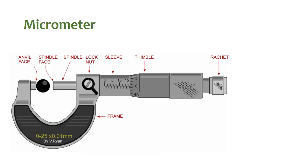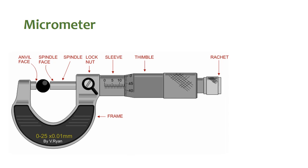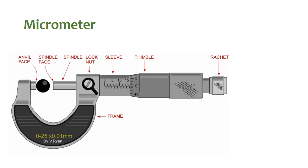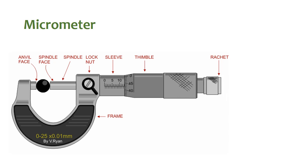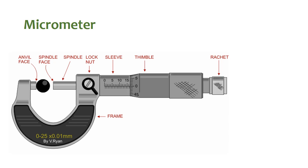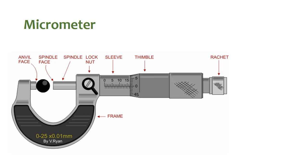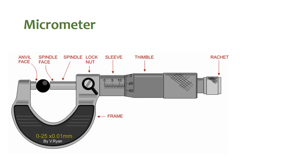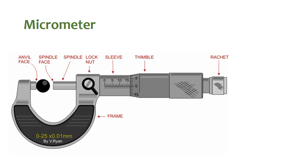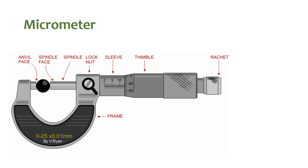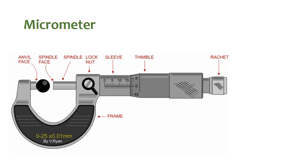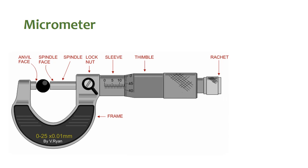Micrometer. Micrometer usually measures the length in millimeters. It usually measures thickness and the diameter of small spheres. To measure the diameter of small spheres we need to focus on the sleeve and thimble, which gives us the reading of the main scale and circular scale.